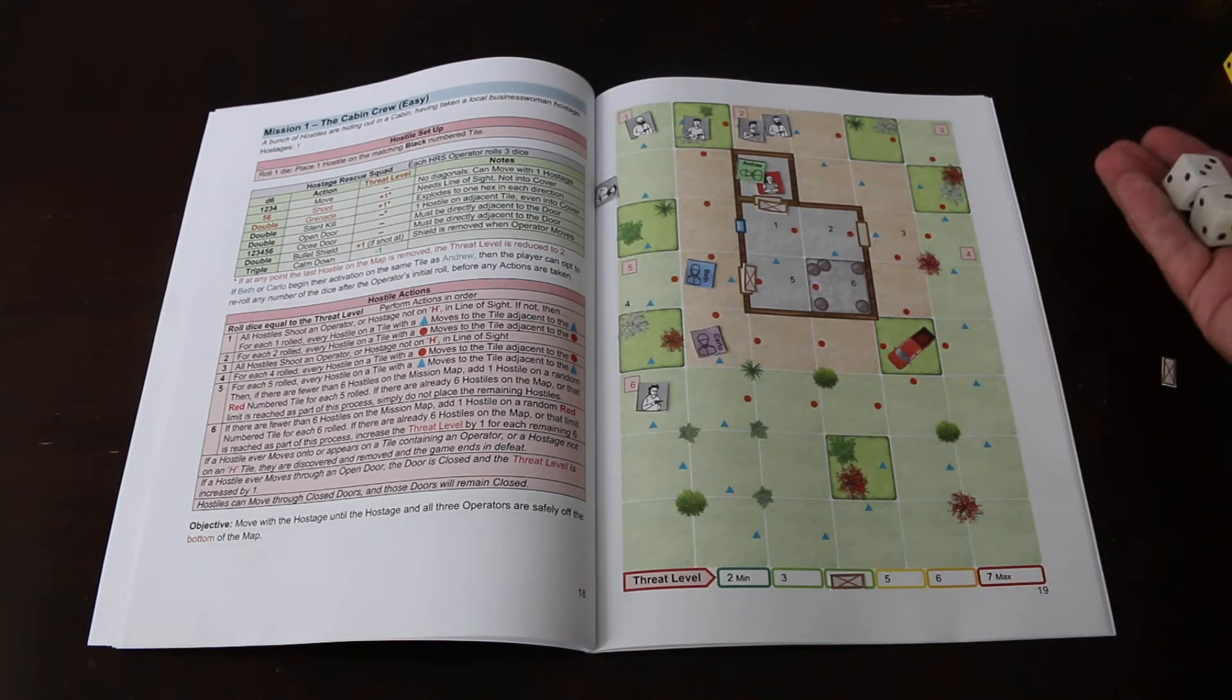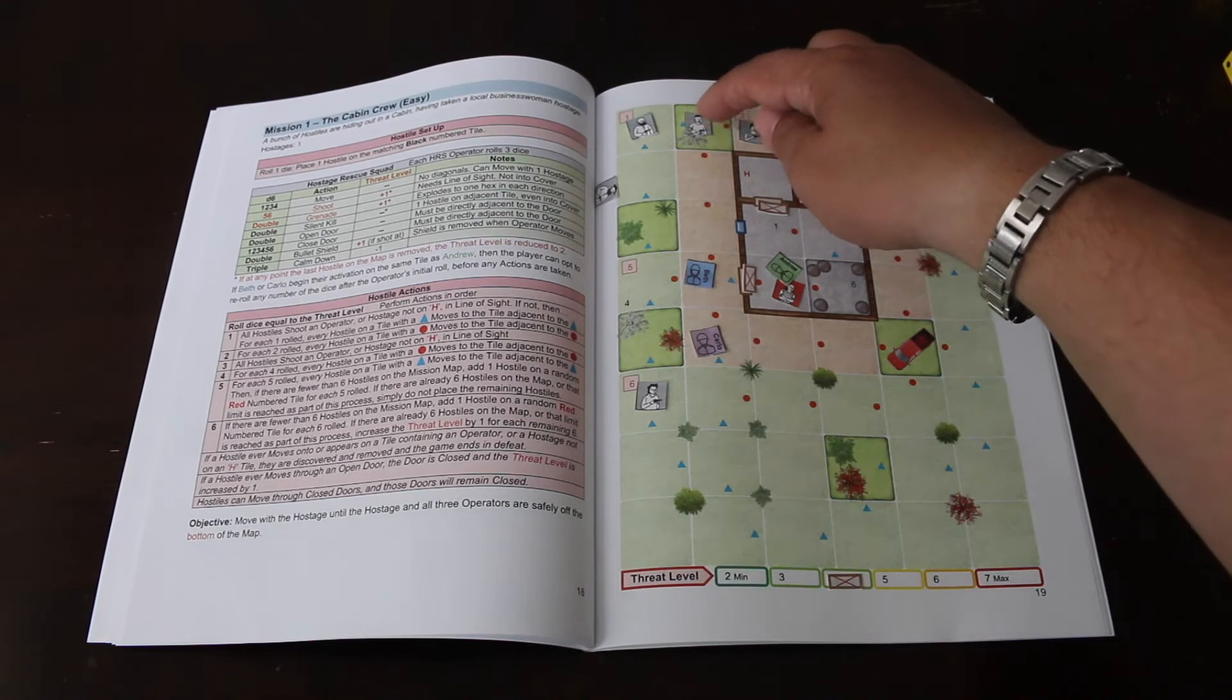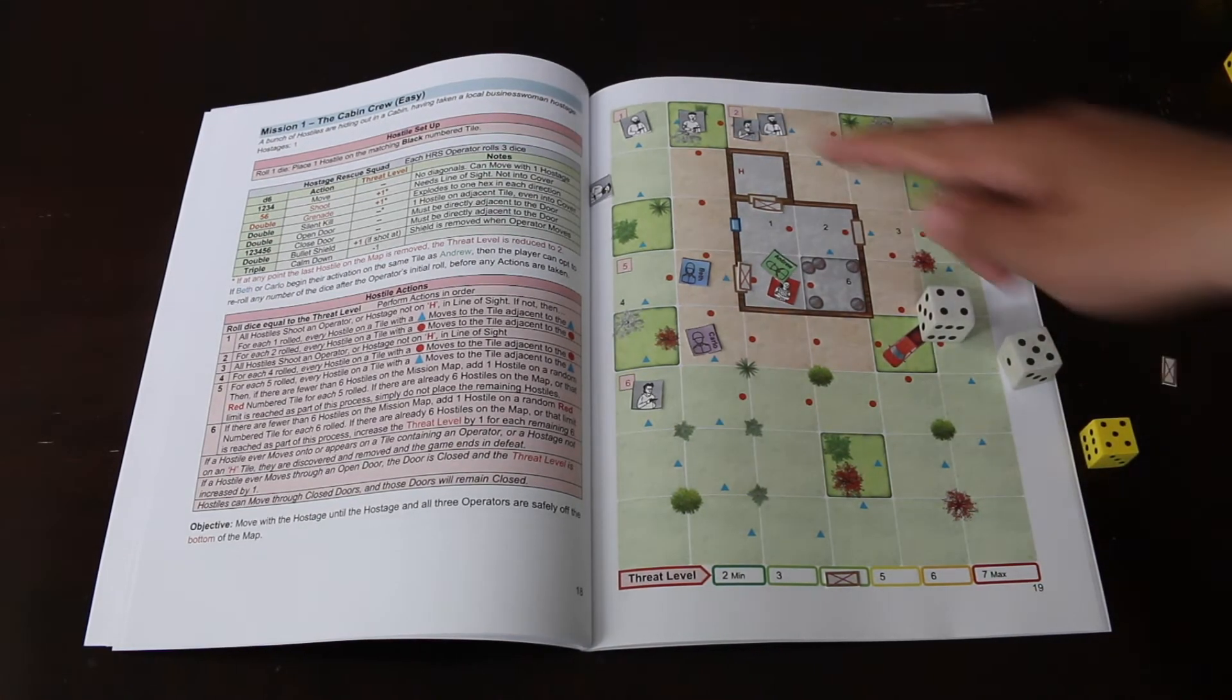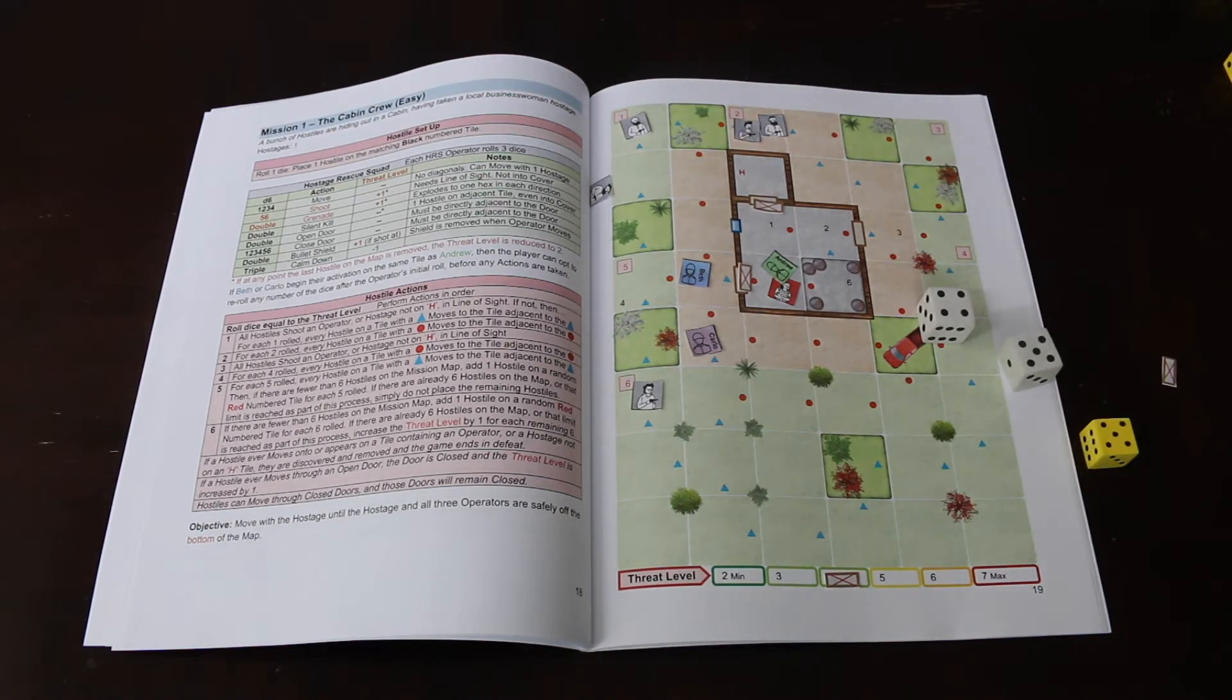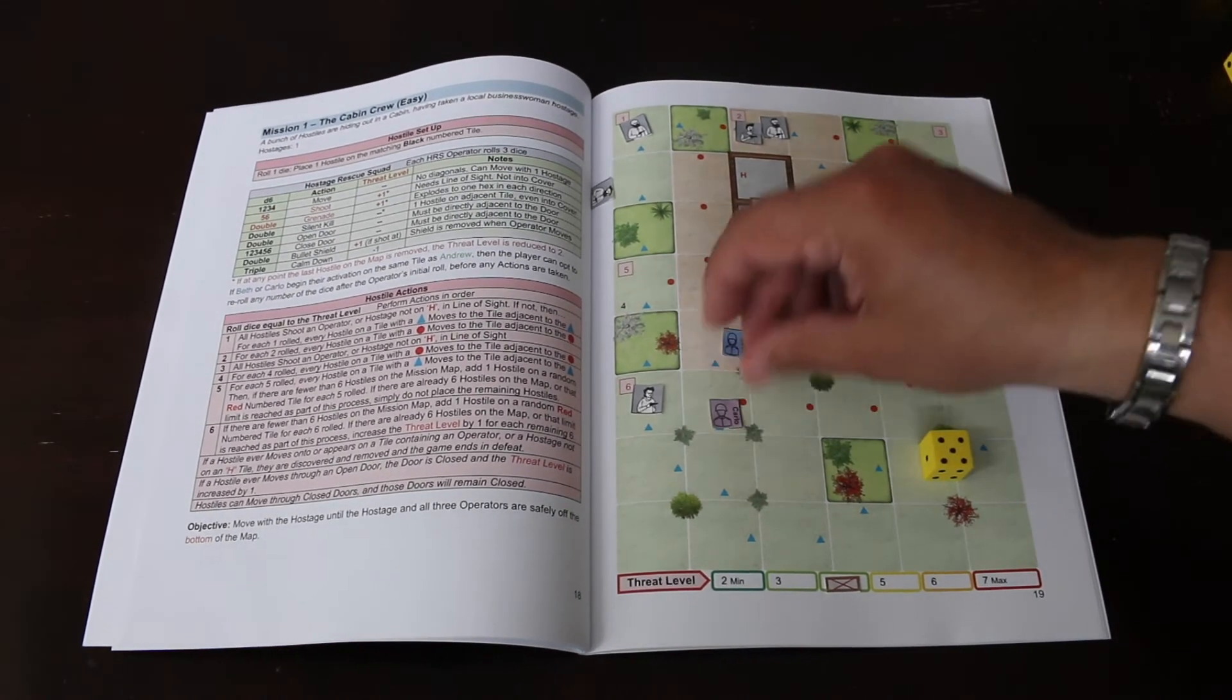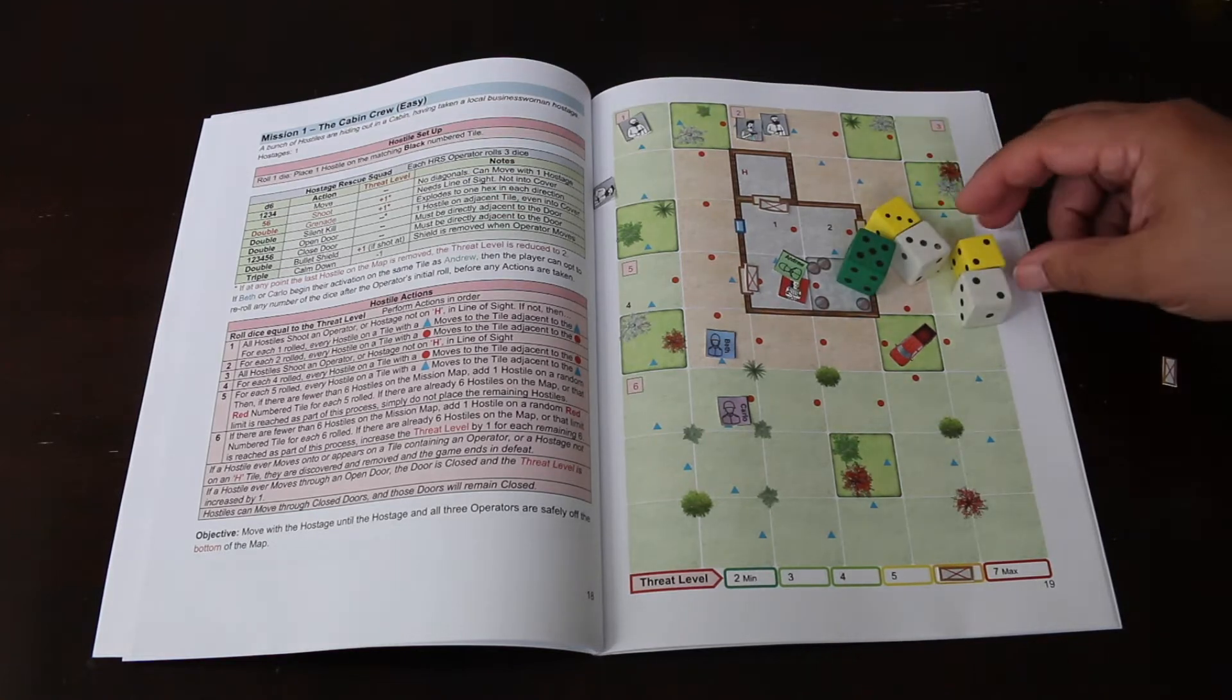We're going to roll for Andrew now, and he's going to move with the hostage. Now we roll for Beth. She's in line of sight of that guy there, but this guy is in terrain so she cannot see him. She's going to need to move out of the way so he doesn't shoot her. She's going to throw a grenade here, which will affect this space, this space, this space, and this space. This guy is dead. She can move, so she'll move with Carlo here. Now Carlo will go. He moves one and then shoots this guy. This has to move up twice - once for a grenade and once for this guy shooting. Now the bad guys are going to roll five dice.